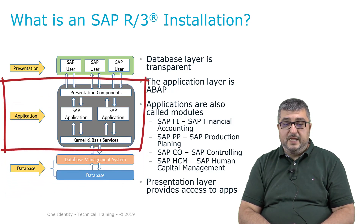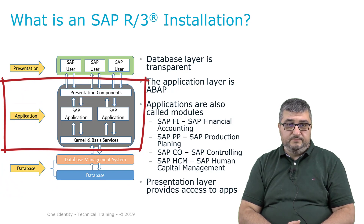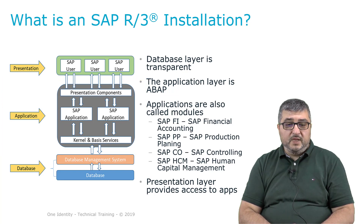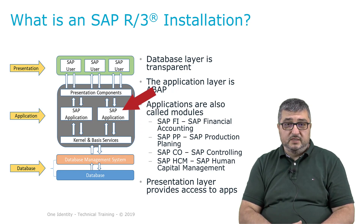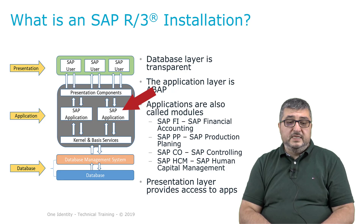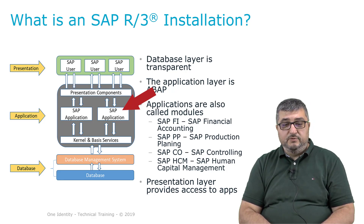The application layer is an application server installed on a specific system that uses the database. On these application servers there is a common kernel and basis services that provide authentication and authorization services, amongst others, to additional applications running on top of this kernel or basis system. These applications are also called modules in SAP language.